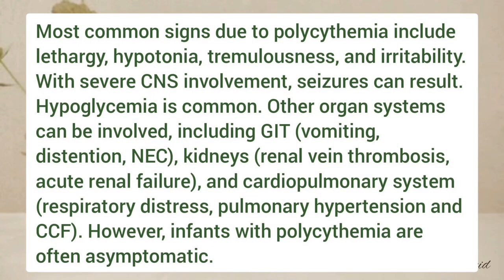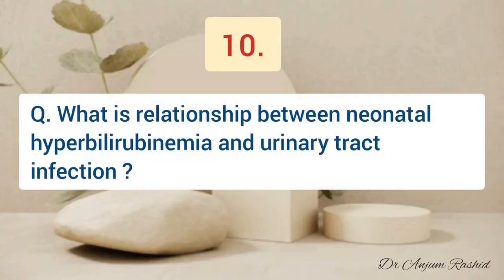What are the clinical manifestations of polycythemia in a neonate? The most common signs include lethargy, hypotonia, tremors, and irritability; in severe cases seizures can occur. Hypoglycemia is also common. Other organ systems can be affected: the GI tract may show vomiting and distension; the kidneys may show renal vein thrombosis and acute renal failure; and the cardiopulmonary system may show respiratory distress, pulmonary hypertension, and congestive cardiac failure. However, infants with polycythemia are often asymptomatic.